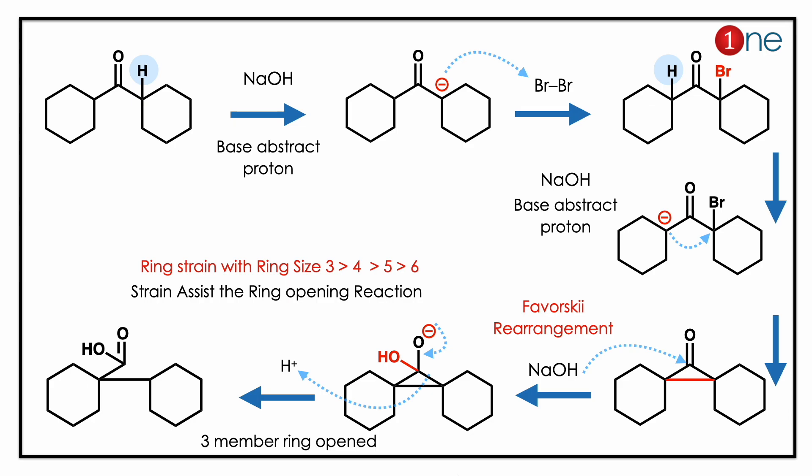This gives the chance for the Favorskii rearrangement. The anion attacks and forms a cyclopropanone ring. Sodium hydroxide then attacks, forming an anion. The anion undergoes quenching through ring opening, because ring strain assists the reaction — the three-membered ring is highly strained. The key concept: a ketone with an acidic alpha hydrogen treated with bromine will always undergo Favorskii rearrangement.